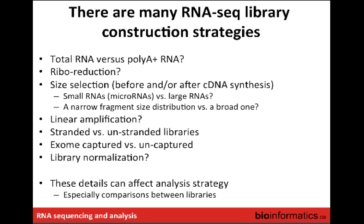Instead of enriching for polyadenylated RNAs, you can do a ribo-reduction, which is sequencing total RNA and depleting ribosomal RNAs. Size selection is sometimes done before cDNA synthesis by fragmenting the RNA, and sometimes after cDNA synthesis by fragmenting the cDNA. Even with a holistic approach, there are caveats — the most common Illumina RNA-seq kit still does a substantial size selection, so small RNAs are pretty much deliberately discarded.